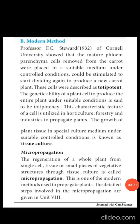The modern method of vegetative reproduction was pioneered by Professor F.E. Steward working at Cornell University. He isolated mature phloem parenchyma cells from the carrot plant. Under suitable controlled conditions, these cells developed into an entire new carrot plant. The ability of plant cells to produce an entire plant is described as totipotency — the genetic ability of plant cells to produce an entire plant under suitable medium.